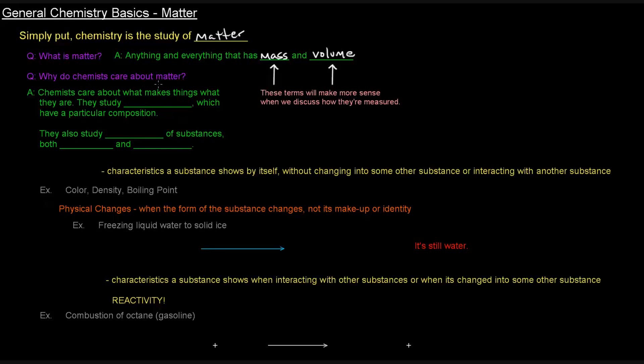But now, why do chemists care about matter? Because it matters. Chemists care about what things or what makes things what they are. They study substances, which are things that have a particular composition or a particular makeup. We'll talk more about the definition of substances and what is classified as a substance later. But they also study the properties of substances. And these properties include both physical and chemical properties.